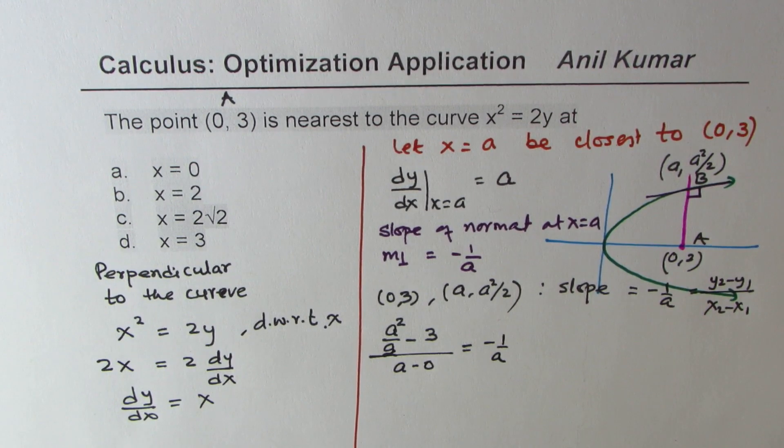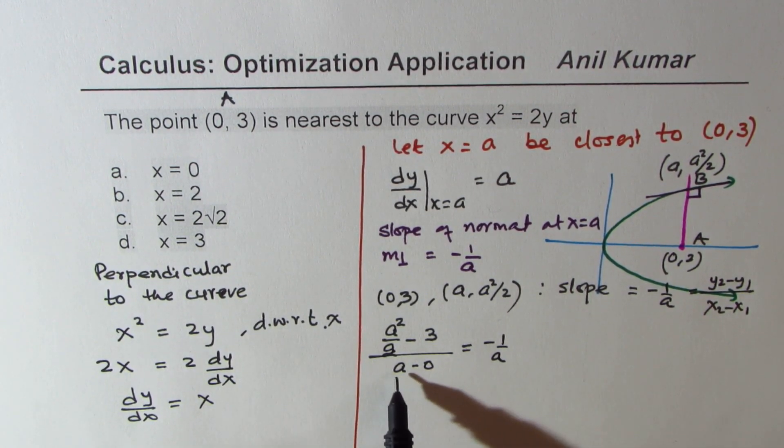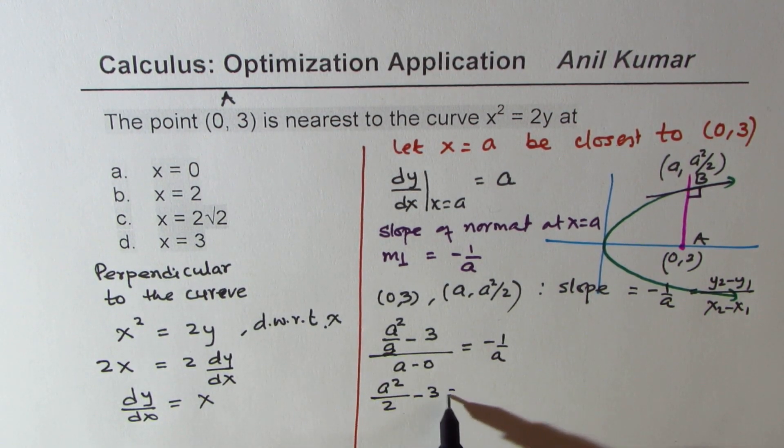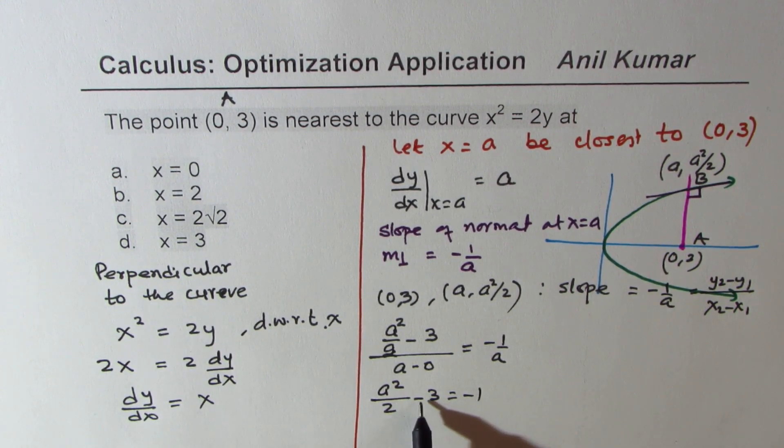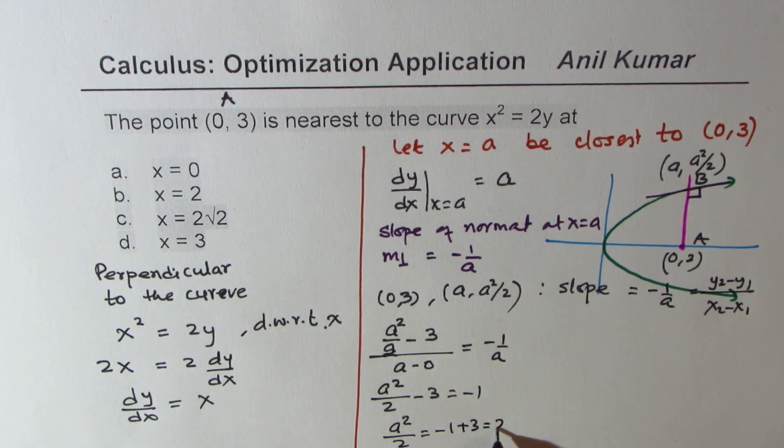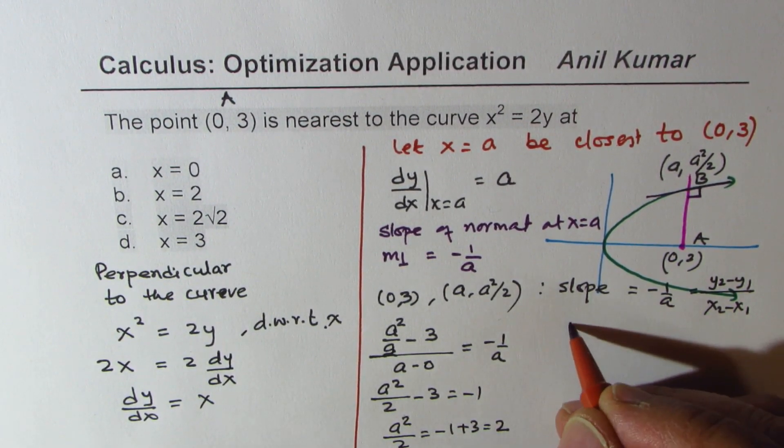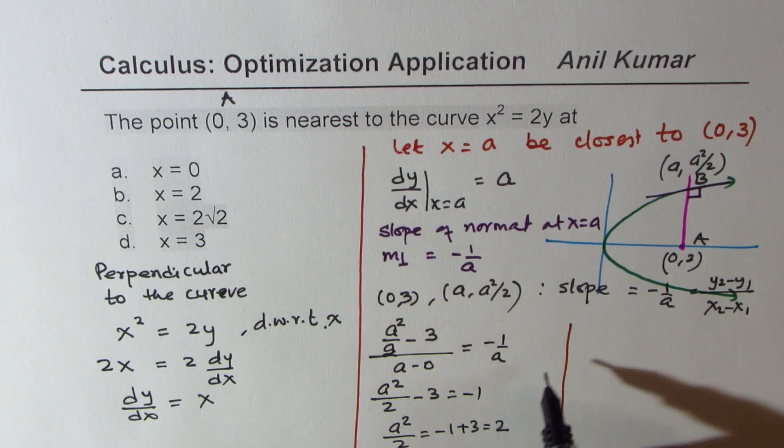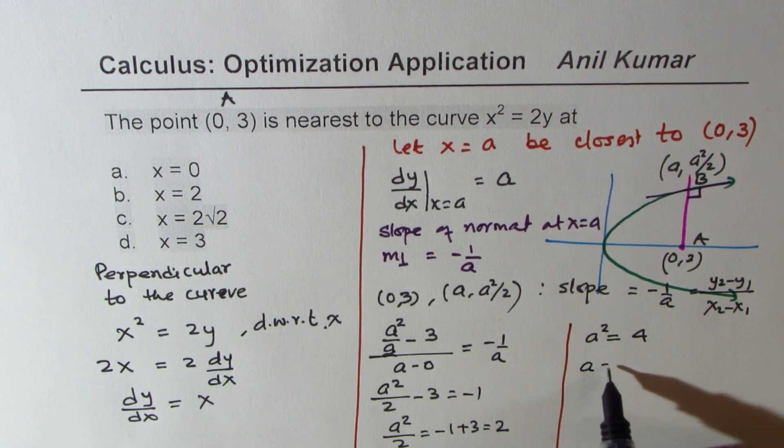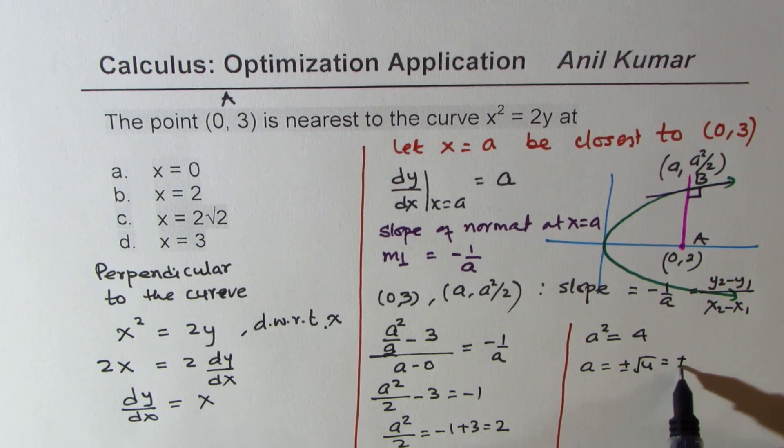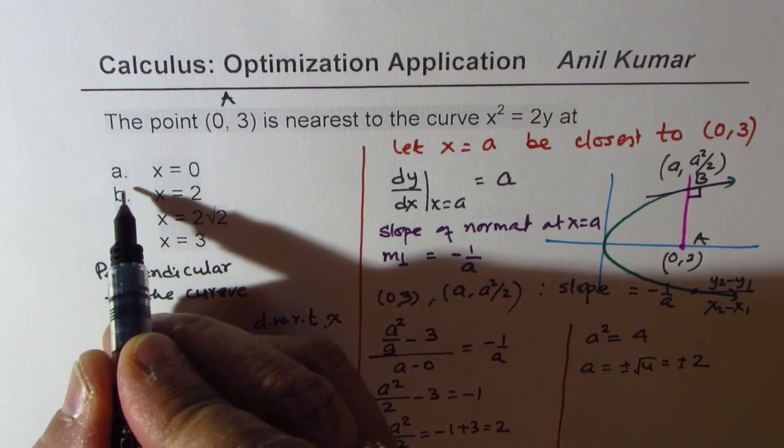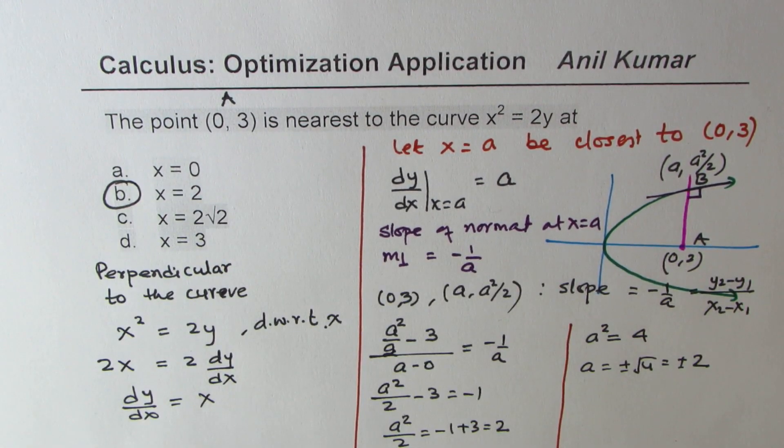So from here that denominator a cancels and you get a²/2 - 3 = -1. We can solve it: a²/2 = -1 + 3 = 2. So a² = 4, or a = ±2. So the value of a is ±2. We are given one option x = 2, so that is the point which is closest to the given point (0, 3).